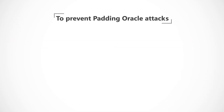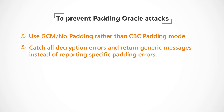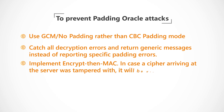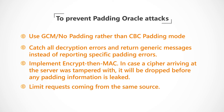To prevent Padding Oracle attacks, developers should use GCM No Padding rather than CBC Padding mode. Catch all decryption errors and return generic messages instead of reporting specific padding errors. Implement Encrypt then MAC — in case a cipher arriving at the server was tampered with, it will be dropped before any padding information is leaked. And finally, limit requests coming from the same source.